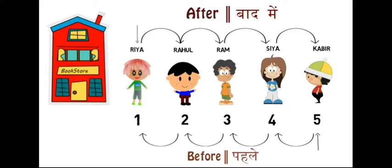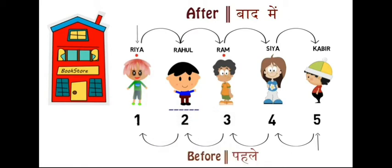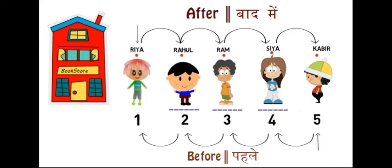Now tell me who is standing between Ria and Ram? Yes, Rahul. Now tell me who is standing between Rahul and Sia? Ram is standing between Rahul and Sia. Now, who is standing between Ram and Kabir? Yes, Sia is standing between Ram and Kabir. And who all are standing between Ria and Kabir? Rahul, Ram, and Sia.